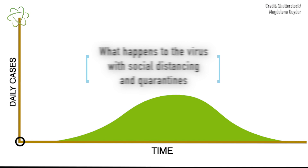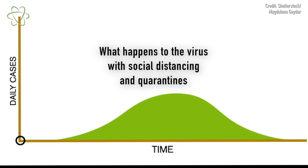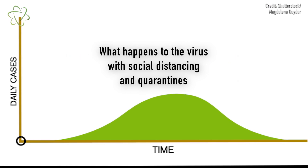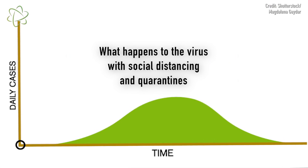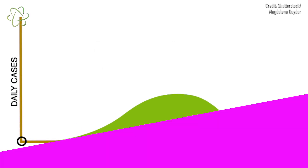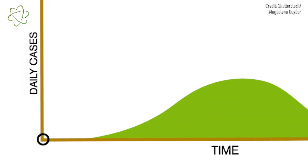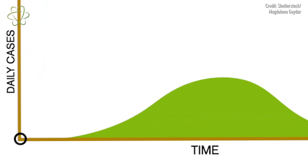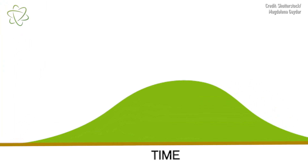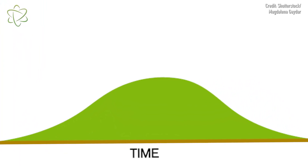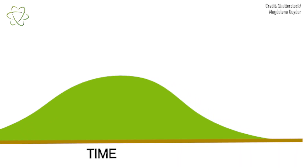The second curve, on the other hand, represents a pandemic that has been met early with interventions like quarantining and social distancing. More people stay at home, so fewer people become infected at a given time. The infection rate spreads much more slowly, and hospitals are able to meet the demands of incoming patients.